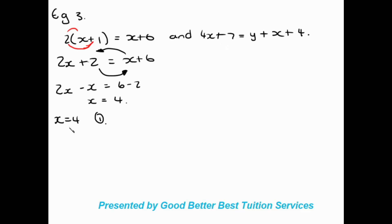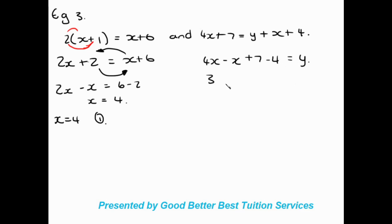Now for the second equation, we already know X. We need to make Y the subject. Keeping Y on one side: 4X minus X plus 7 minus 4 equals Y. Simplifying, 4X minus X gives 3X, and 7 minus 4 gives 3, so Y equals 3X plus 3. We'll call this equation number 2.